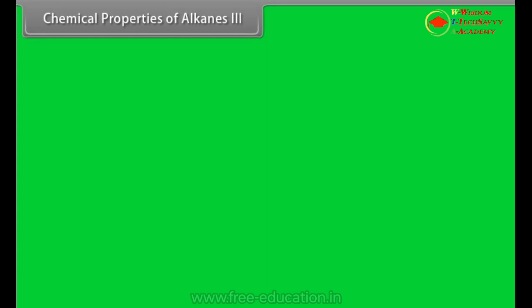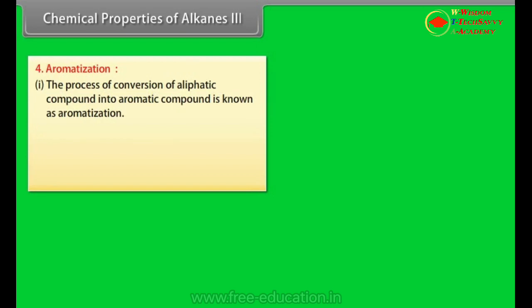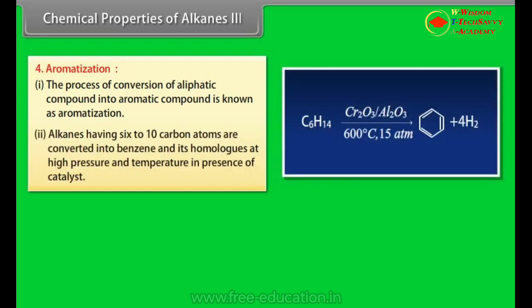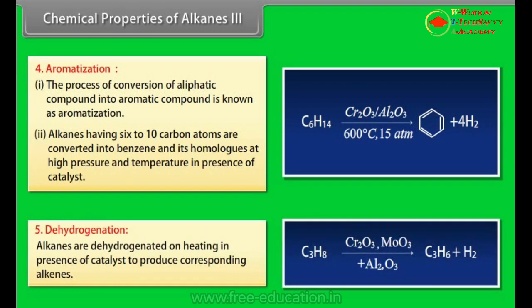Chemical properties of alkanes part 3. Aromatization: Number 1: The process of conversion of aliphatic compound into aromatic compound is known as aromatization. Number 2: Alkanes having 6 to 10 carbon atoms are converted into benzene and its homologues at high pressure and temperature in presence of catalyst. Dehydrogenation: Alkanes are dehydrogenated on heating in presence of catalyst to produce corresponding alkenes.